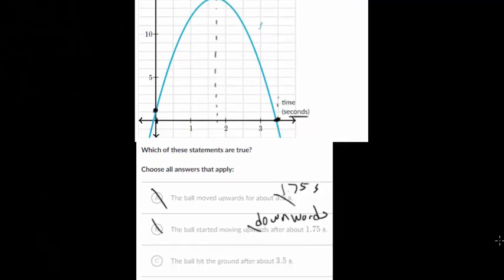And choice C, the ball hit the ground after about 3.5 seconds. Now that one we did come across. That one is true. Because at a height of zero, that's when the ball would hit the ground. You can see that our time is about 3.5 seconds. So that one is true.